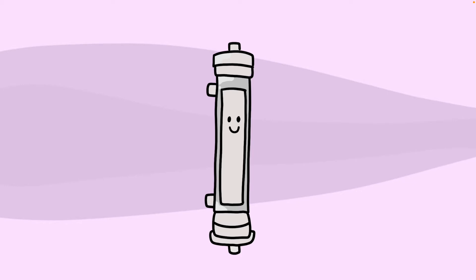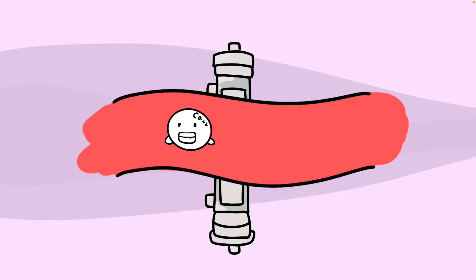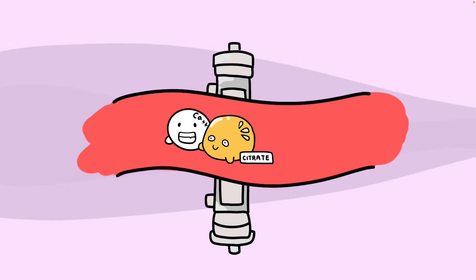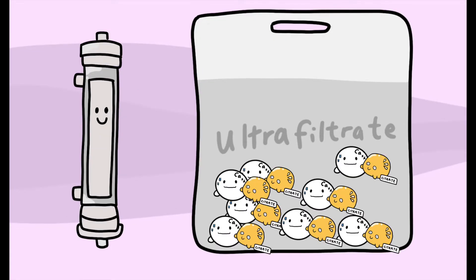In the circuit, citrate is added before the filter, binding to the calcium in the blood, preventing the coagulation cascade from occurring. The majority of the calcium-citrate complex is freely filtered and lost in the ultrafiltrate or dialysate. Systemic calcium infusion is required to replace the calcium lost with citrate.